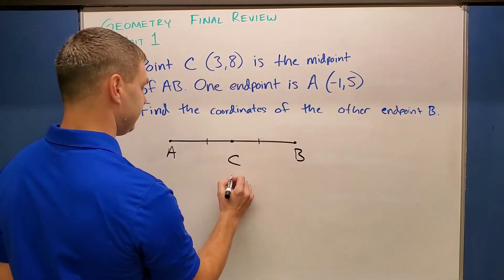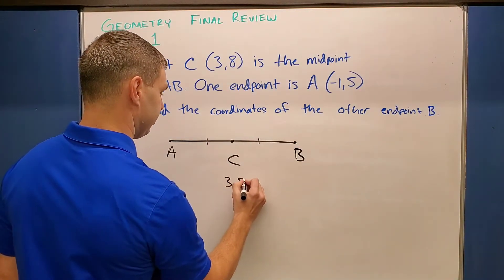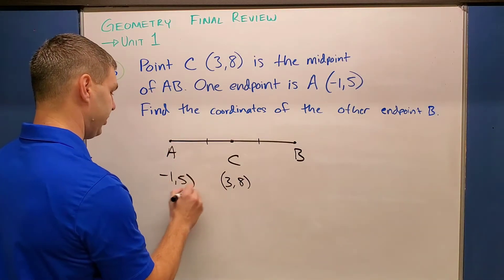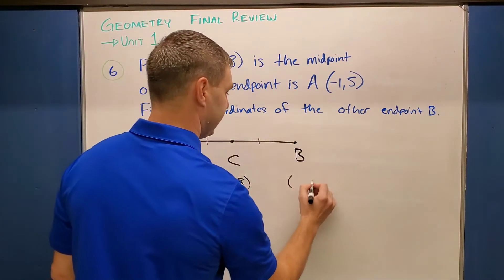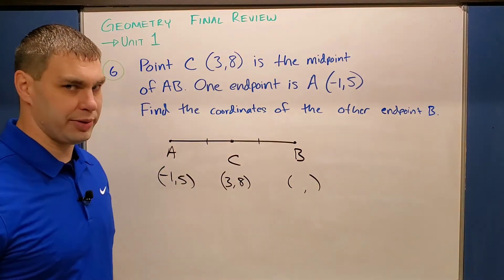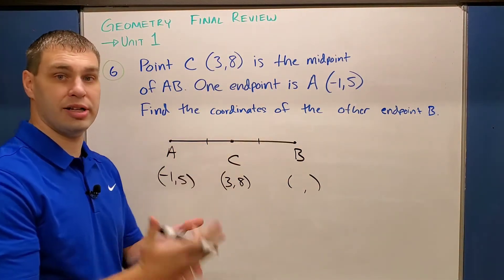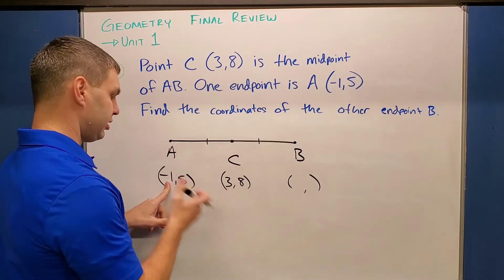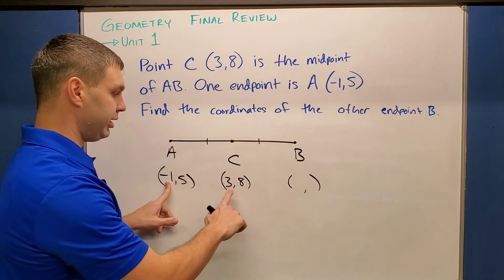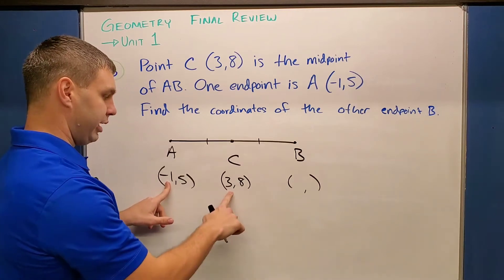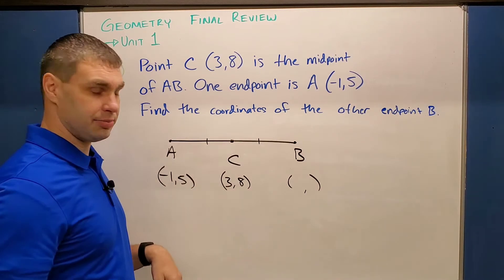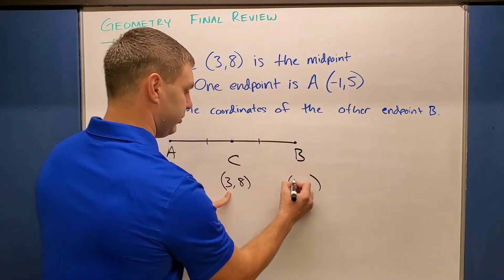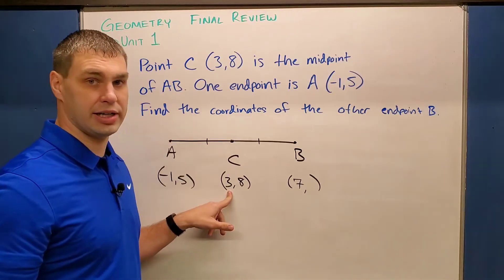So for example, C is (3,8). I'll put that down here. And then A is (-1,5). If we need to find the coordinates of our other endpoint B, in order to do this one, what we need to look at is our X values first and then our Y values. Our X values go from -1 to 3, starting at -1 on the left and then 3 in the middle. And if you notice here, I went up 4. -1 plus 4 gets me to 3. So if I go up 4 more, that's going to put me at 7 over here for the X value of B.